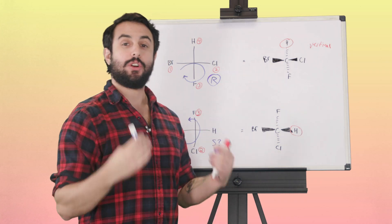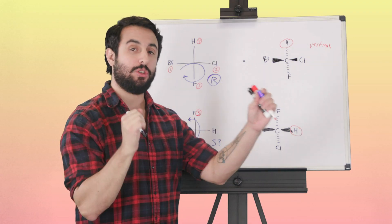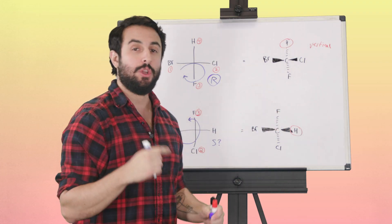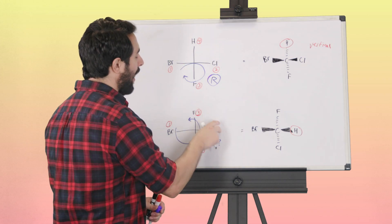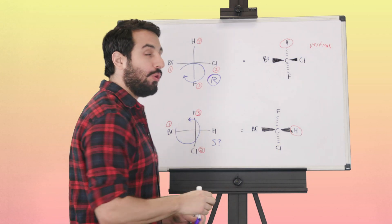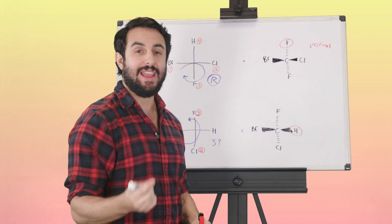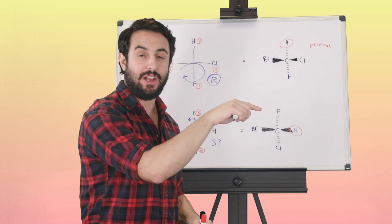However, this was not the appropriate way to do it because the H was facing towards us. Recall that anytime you swap two groups on a stereocenter, you're inverting the stereochemistry. If we had swapped, say, hydrogen and fluorine, then we would have had H on the dash bond.